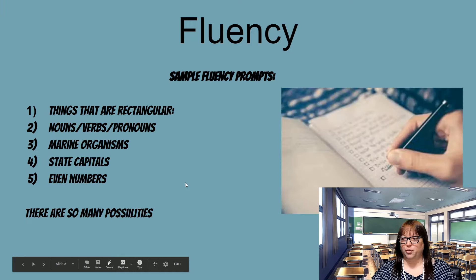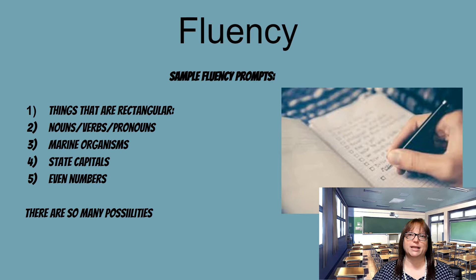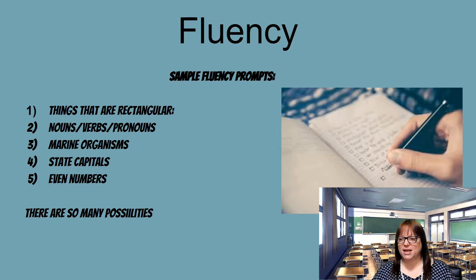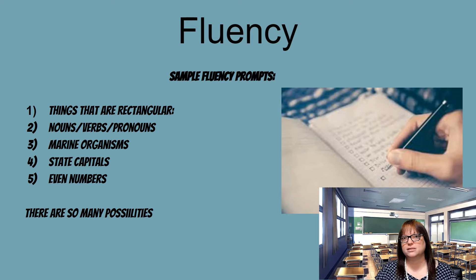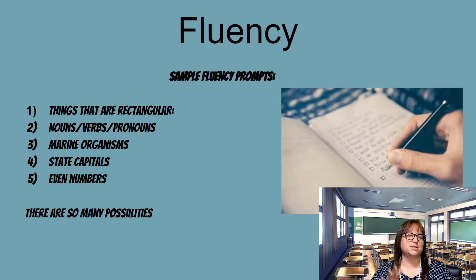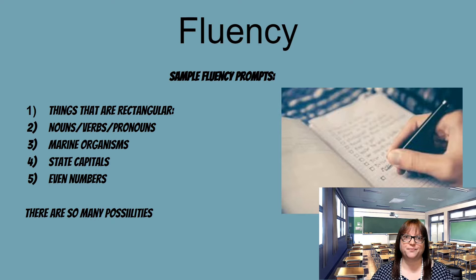One of the things we do when working on fluency is basically have people write lists. If we were together, I would have you make some kind of list. It could be things that are rectangular; for ELA it could be nouns, verbs, and pronouns; for science it could be marine organisms or terrestrial organisms; for social studies it could be state capitals, cultures of the world, or bodies of water; for math it could be even or odd numbers. Fluency is just writing a list.